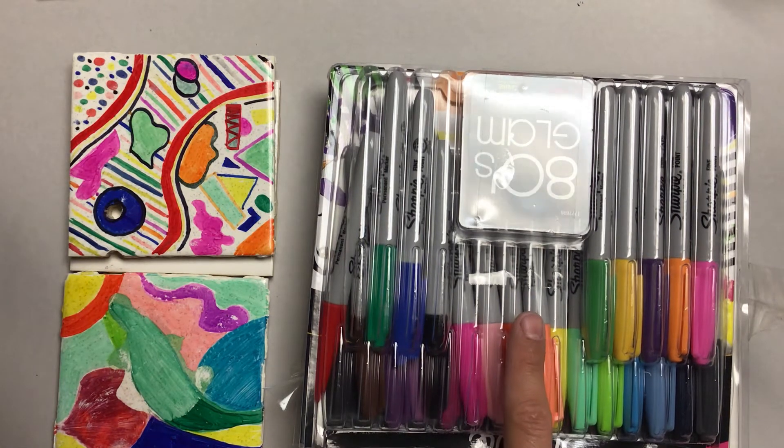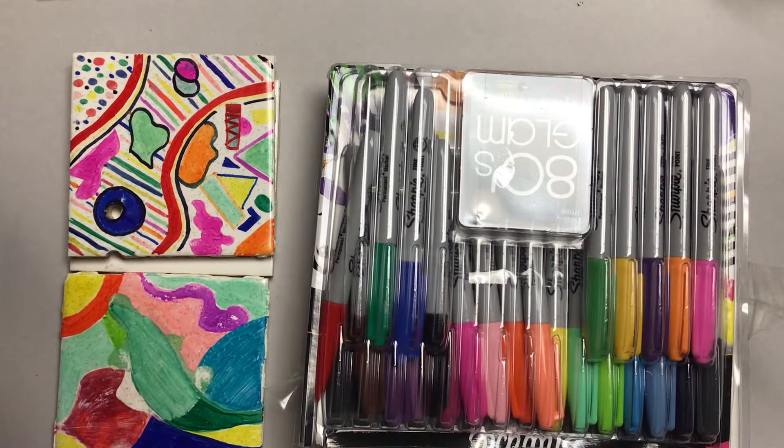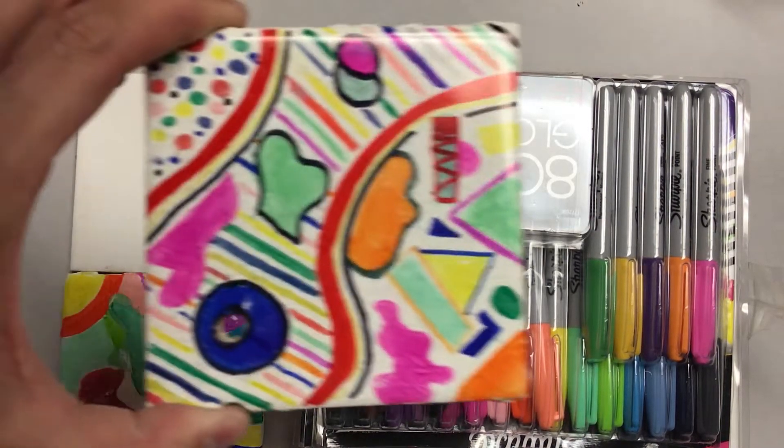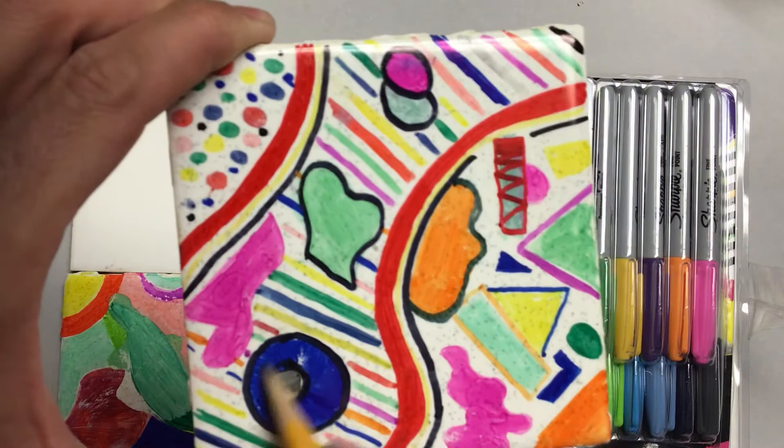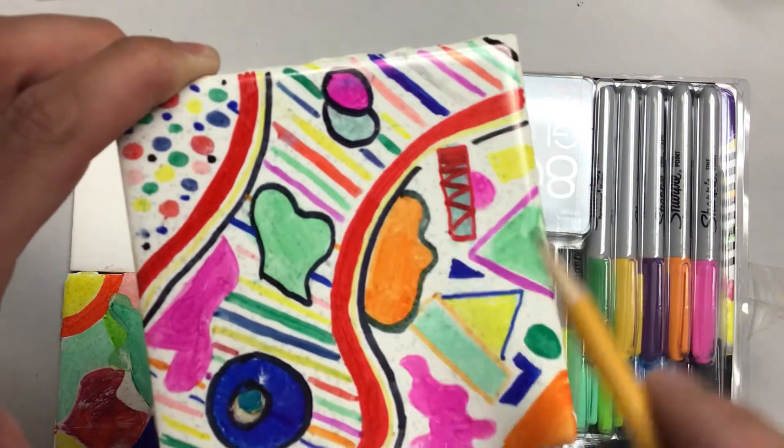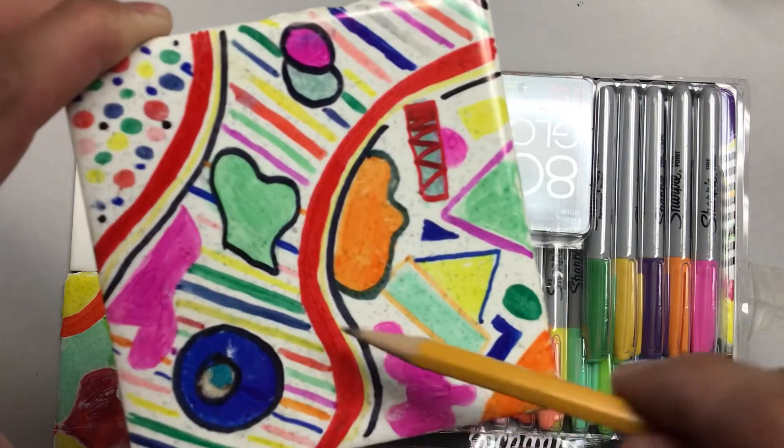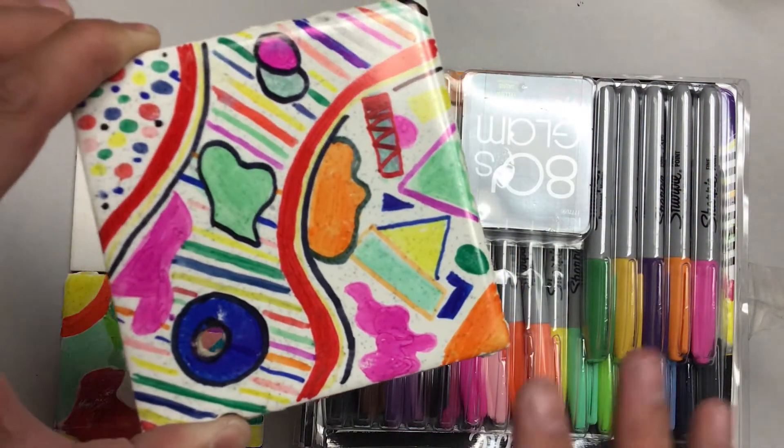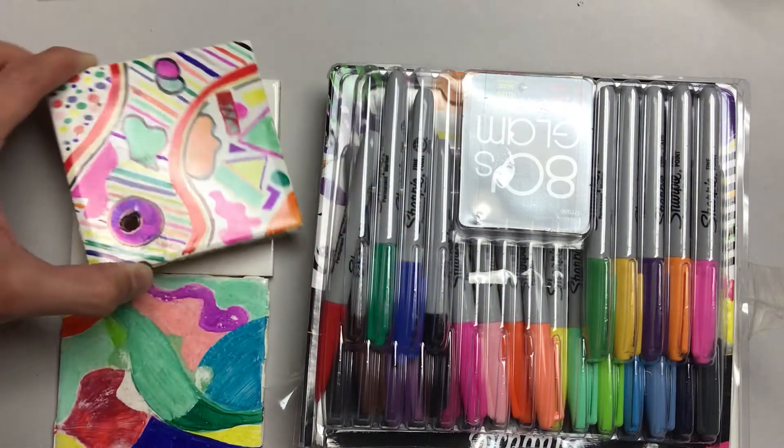Today we're going to be using Sharpies to create a design on a tile. It could be any kind of design, but we need to have an idea in our head before we start. You can see this one even had a hole in it, so they made a circle around that. They have these patterns here and these swirling organic lines—it almost looks like a confetti of fun. It's just a really exciting piece.